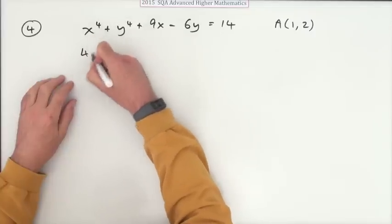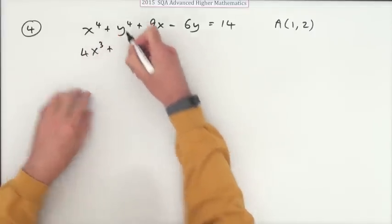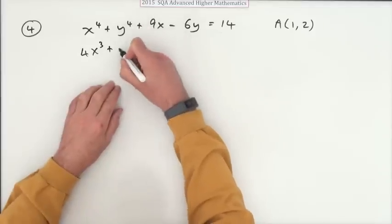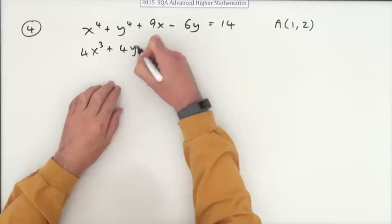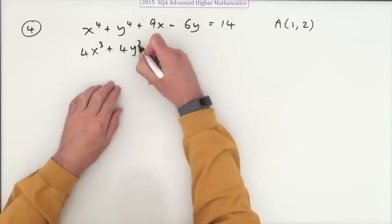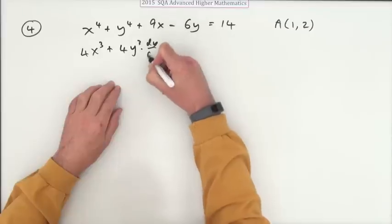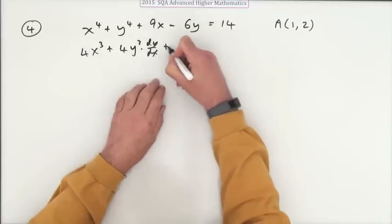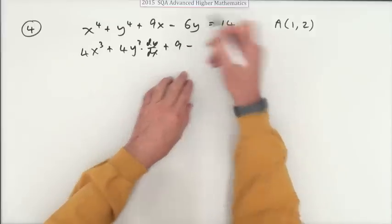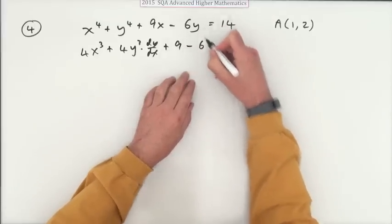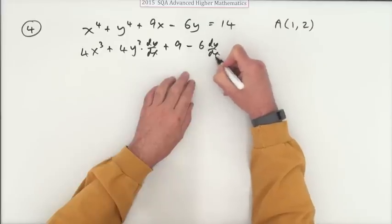Differentiating with respect to x would be 4x³, but this one that's a function of a function, so 4 times whatever the function of x is to the power 3, multiplied by the derivative of that function with respect to x. Plus that's just a 9, minus same again here, 6 times the derivative of that with respect to x.